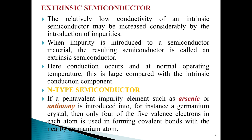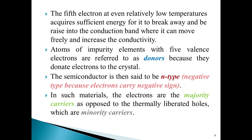If a pentavalent impurity element such as arsenic or antimony is introduced into, for instance, a germanium crystal, then only four of the five outer valence electrons in each atom is used in forming covalent bonds with the nearby germanium atom. The fifth electron, at even relatively low temperatures, acquires sufficient energy for it to break away and be raised into the conduction band where it can move freely and increase the conductivity. Atoms of impurity elements with five valence electrons are referred to as donors because they donate electrons to the crystal. The semiconductor is then said to be n-type, that is negative type, because electrons carry negative sign.